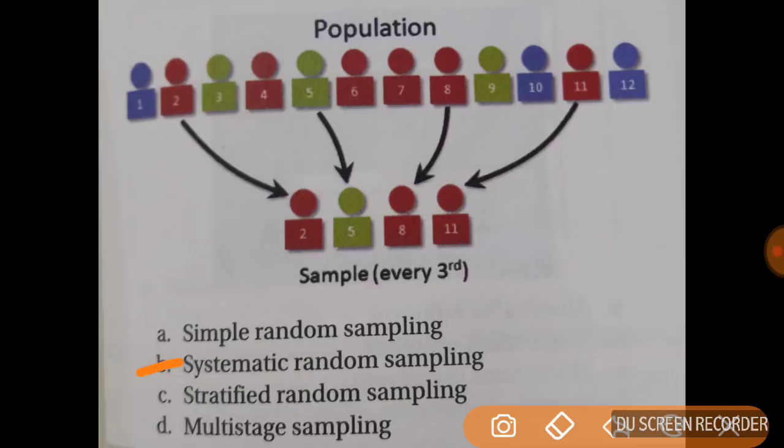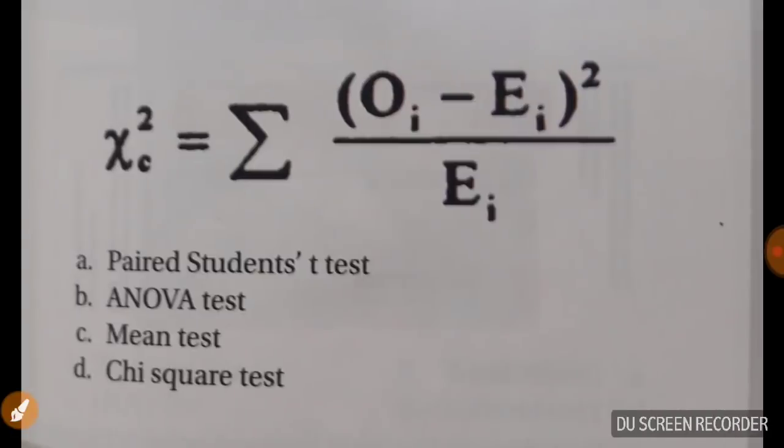This can be done for large non-homogeneous population where complete list of individuals is available. We should know that 50 or 12 number of people are there in the population. Otherwise it will be difficult to decide which one to take, which interval to take for sampling. Now tell me for which this formula is denoting: ANOVA, chi-square, or paired?